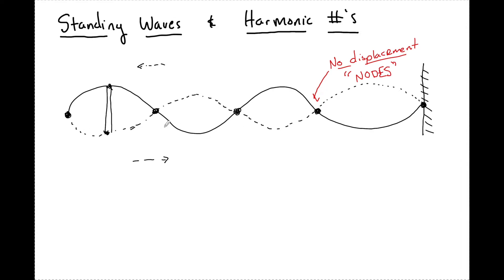In this particular picture, there are five nodes. We must remember that nodes include the end spots — so this endpoint is a node and this one here is also a node. We can't forget about that.